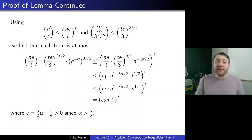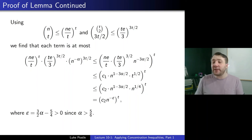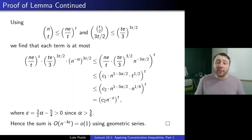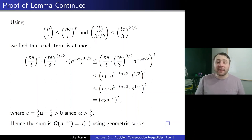Since α > 5/6, we have ε > 0, so each term in the sum is at most c₂ · n^{−ε·t}. Summing from t = 4 to √n gives a geometric series dominated by the t = 4 term, which is O(n^{−4ε}). This goes to 0, so the probability is o(1), completing the proof of the lemma. Almost always, every set of c√n vertices induces a 3-colorable subgraph.